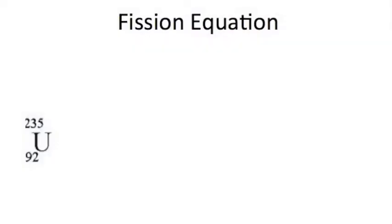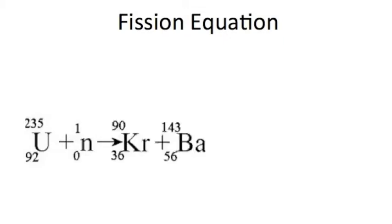A fission reaction is seen here. We start with uranium-235 and inject one neutron to split the atom. This creates two split atoms of krypton and barium, and also splits into three other free neutrons. These free neutrons then split the krypton and barium as well.